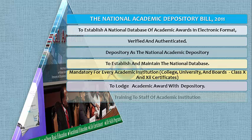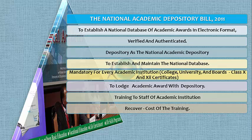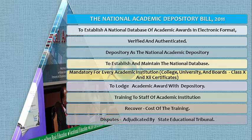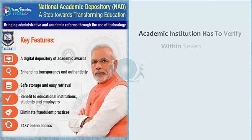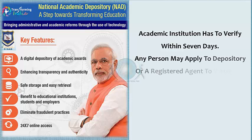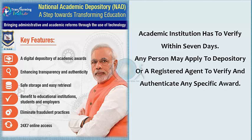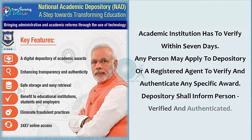The depository shall provide training to staff of academic institutions and recover reasonable costs of training. Any disputes regarding cost shall be adjudicated by the State Educational Tribunal. On a request made by the depository, an academic institution must verify within seven days that the award was indeed issued by the institution. Any person may apply to the depository or a registered agent to verify any specific award, and the depository shall respond within three days.